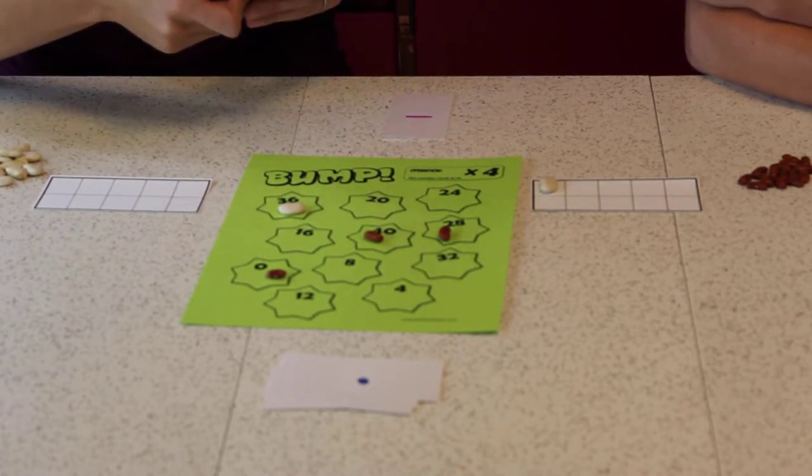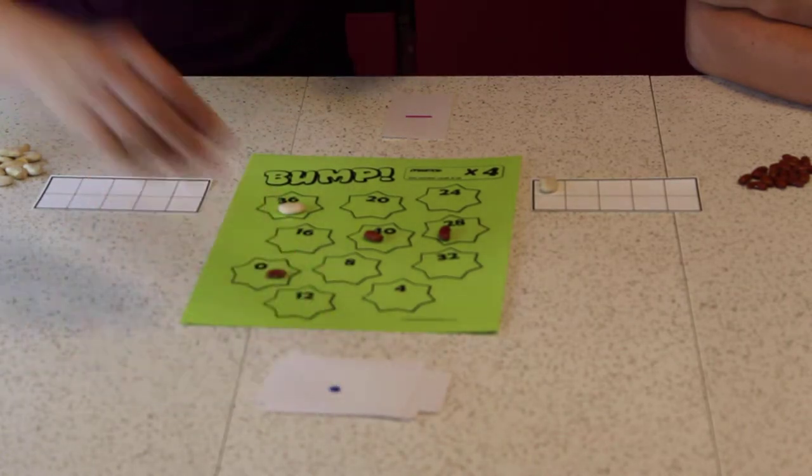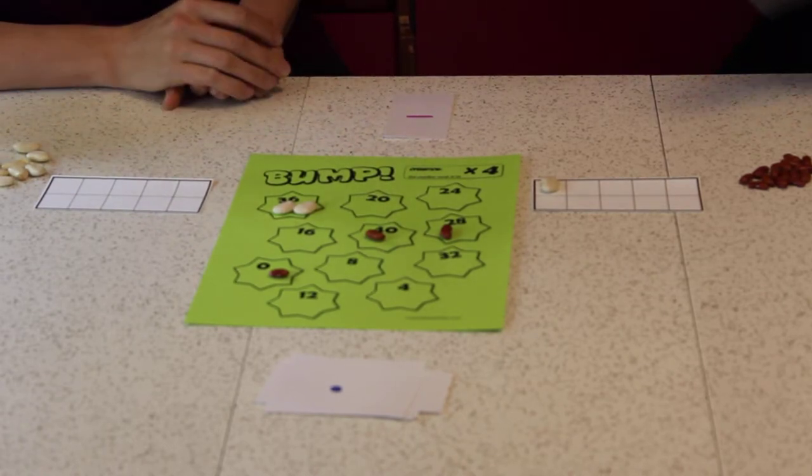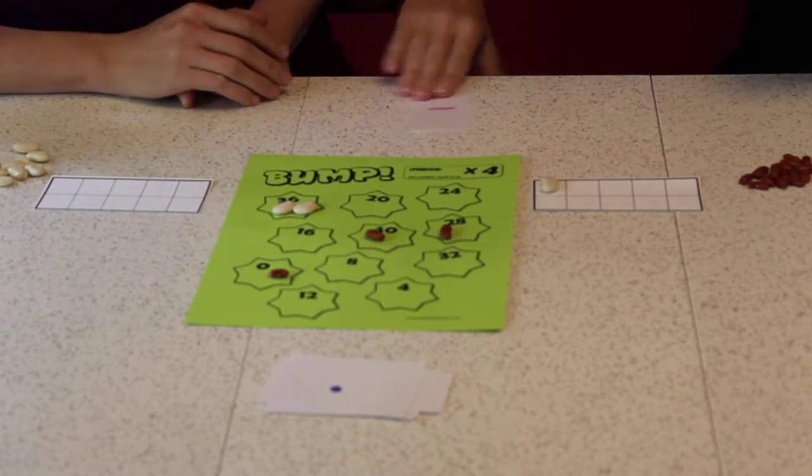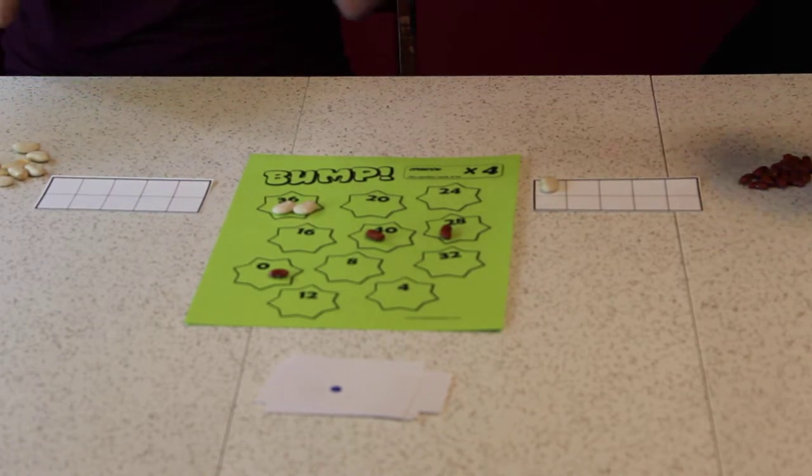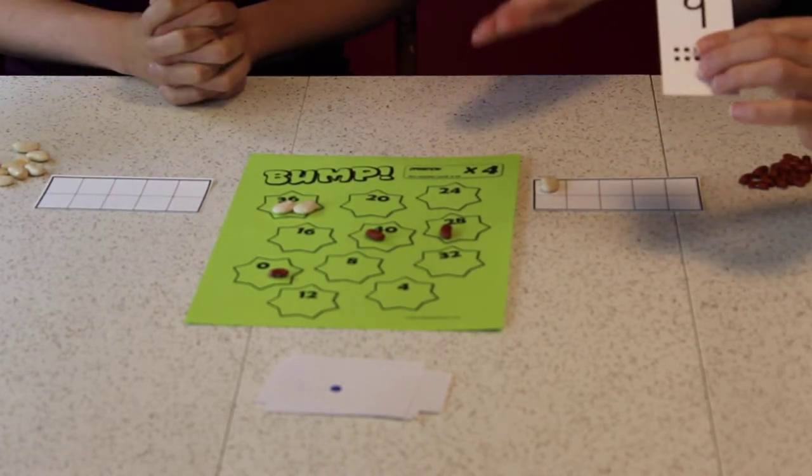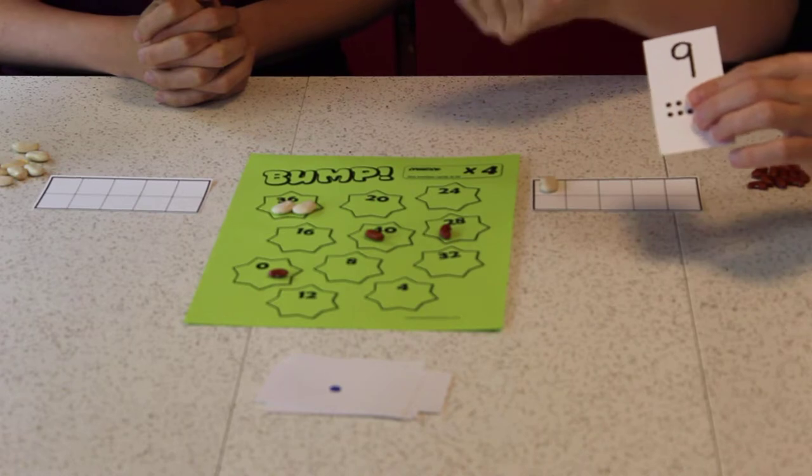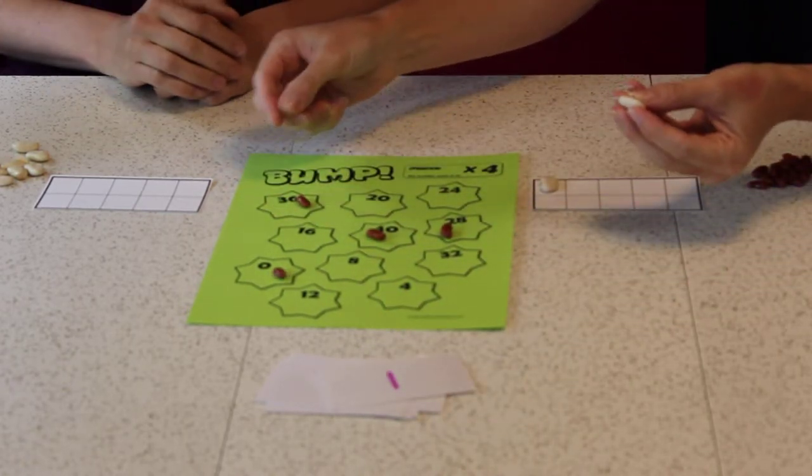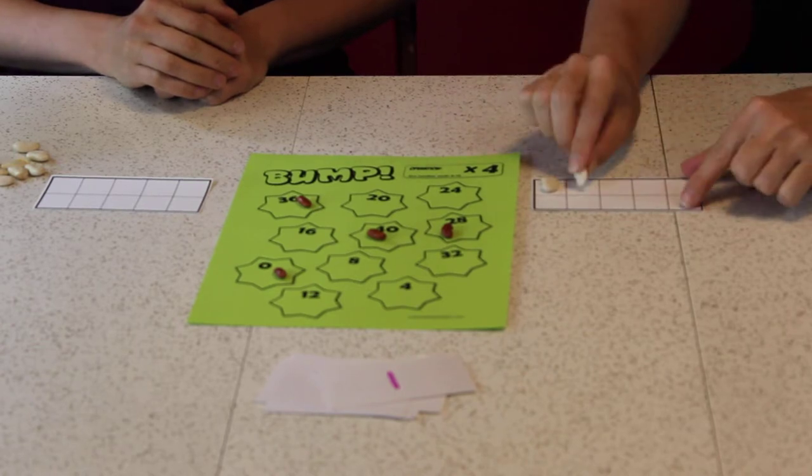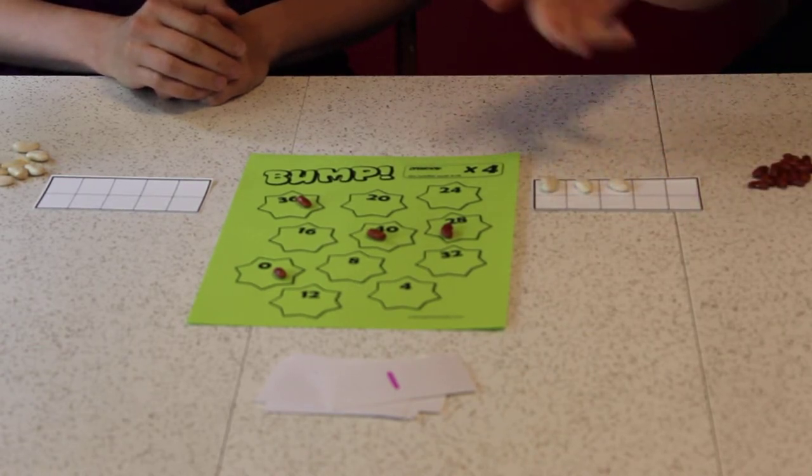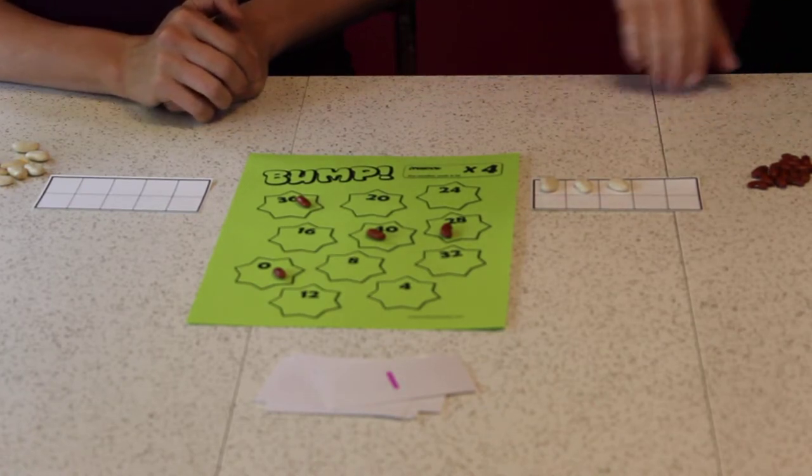Oh man, I got nine again. That means that my beans are stacking up. You have two there. Oh, I hope I get a nine. Nope. There's no way a nine would come out. I got a nine! What? This is so incredible! Nine times four is thirty-six. So my one little kidney bean is gonna bump both of your lima beans off, and I get two, three more points. That's only seven more points until I get ten and win this game.